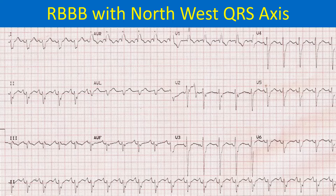The QRS axis is in the north-west region — right upper quadrant — which can mean either extreme right axis or extreme left axis deviation. RS pattern is seen both in the inferior leads and in the lateral leads.